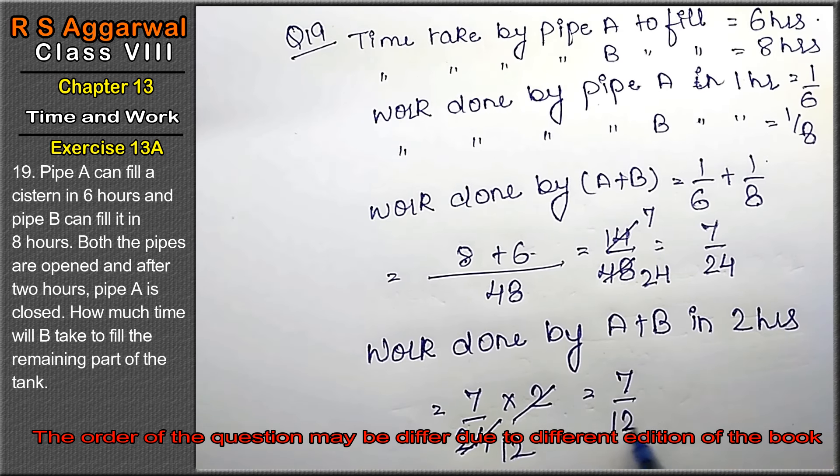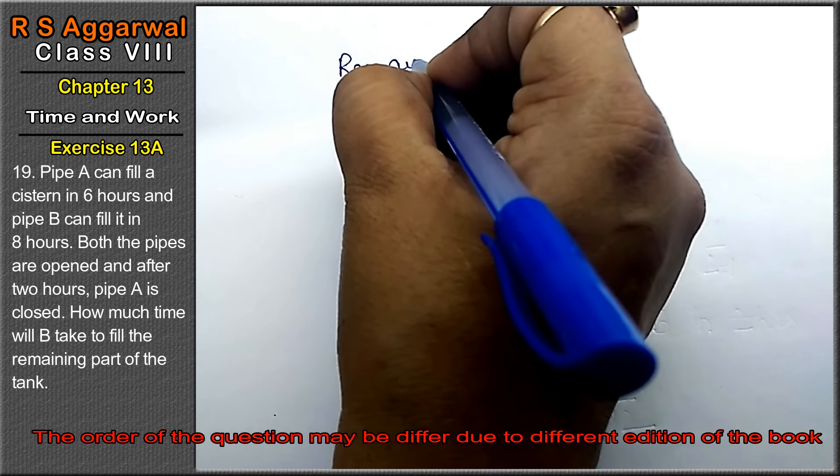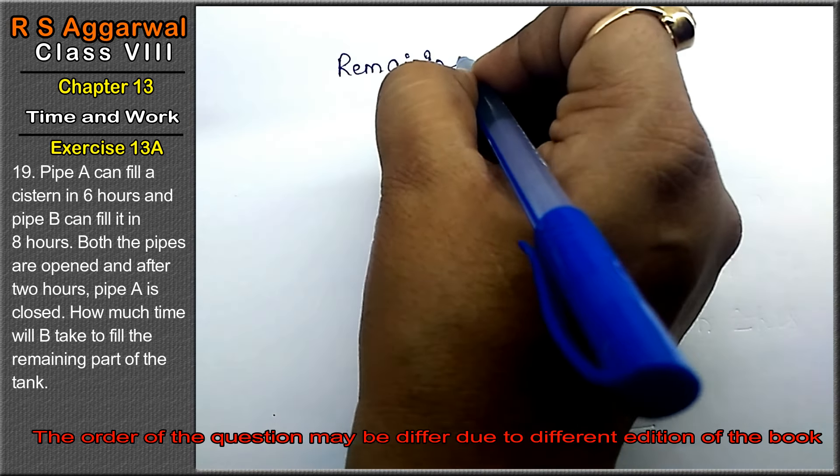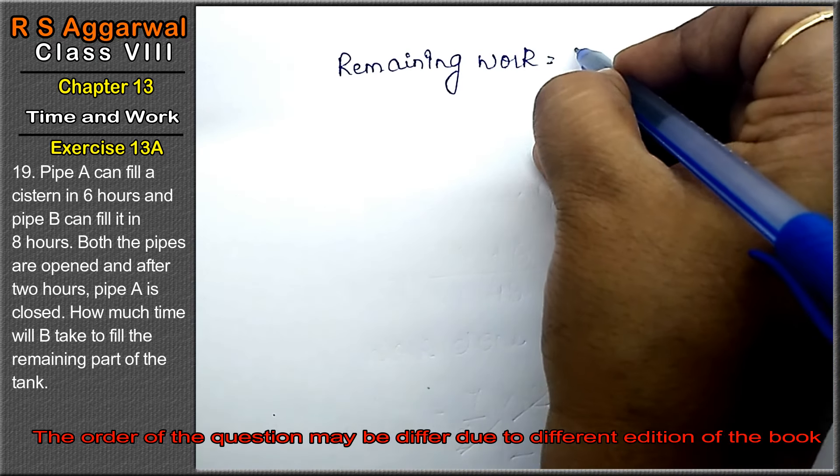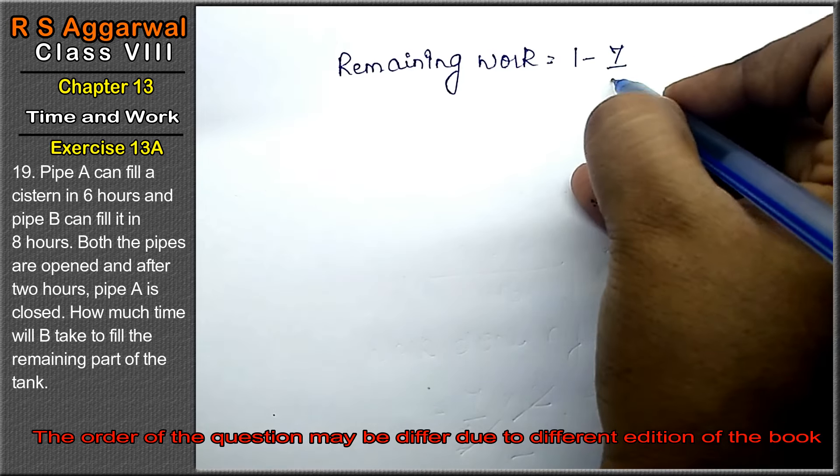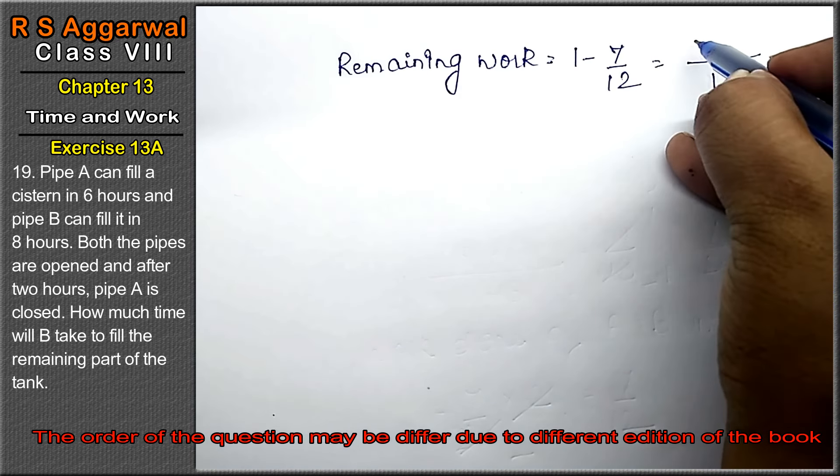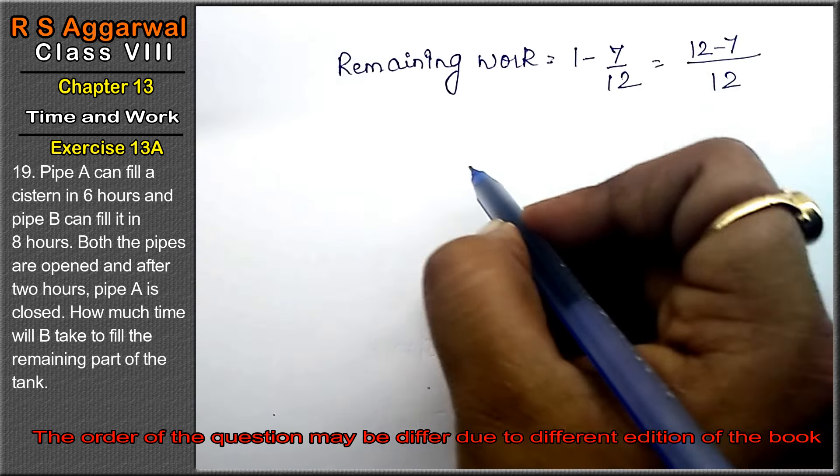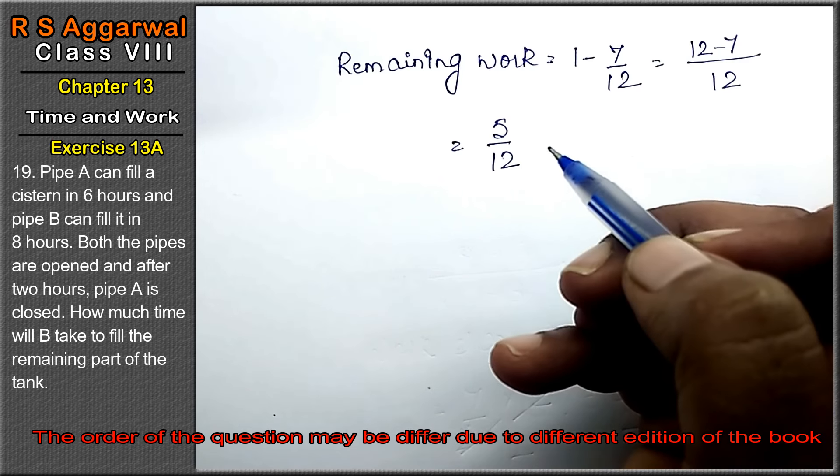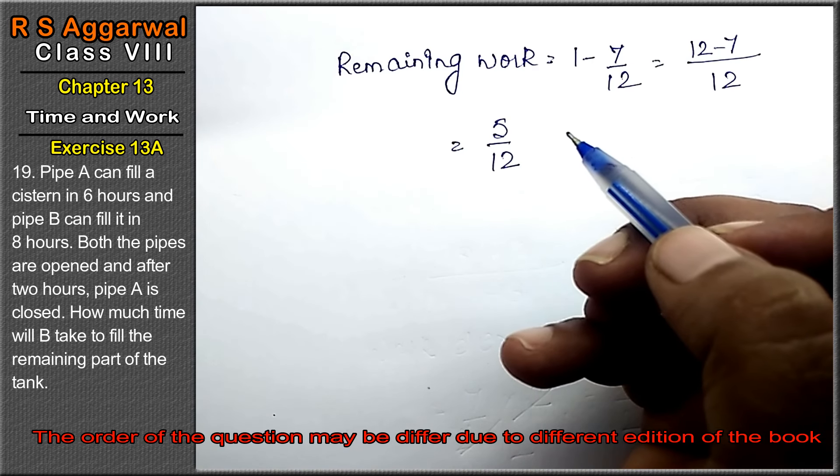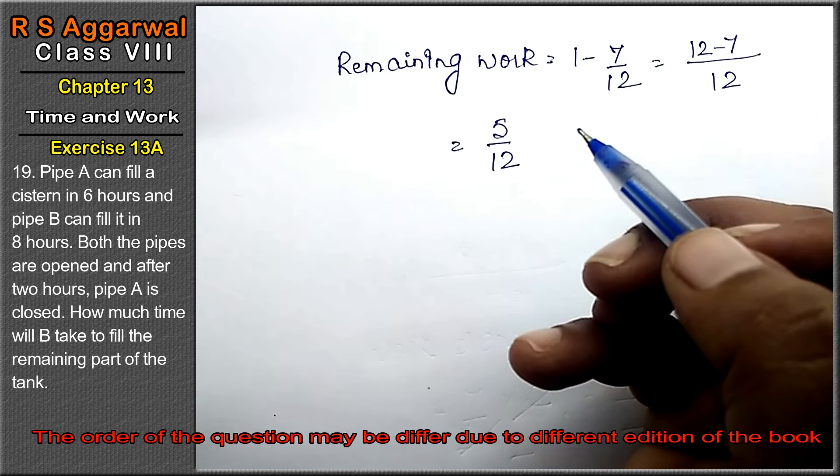Remaining work is 1 minus 7 upon 12, which equals 12 minus 7 upon 12, equals 5 upon 12. Now pipe A is closed, how much time will B take to fill the remaining part of the tank?